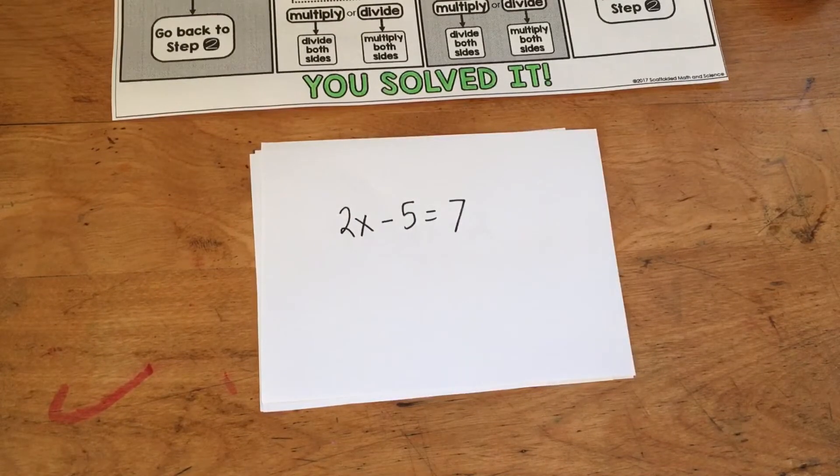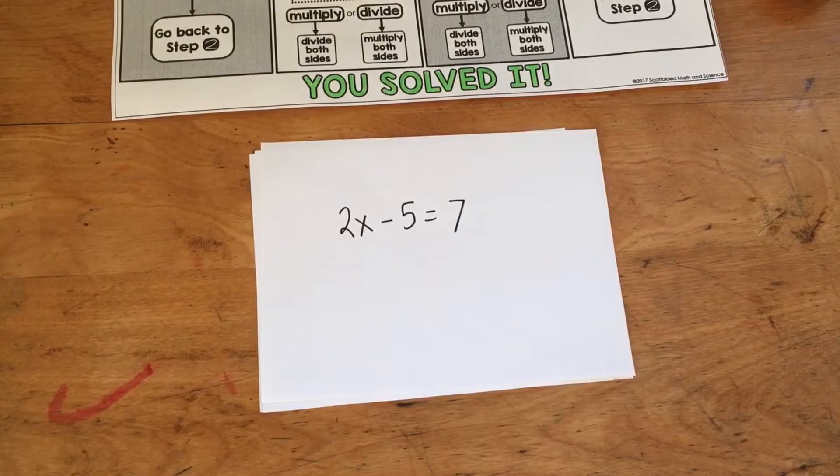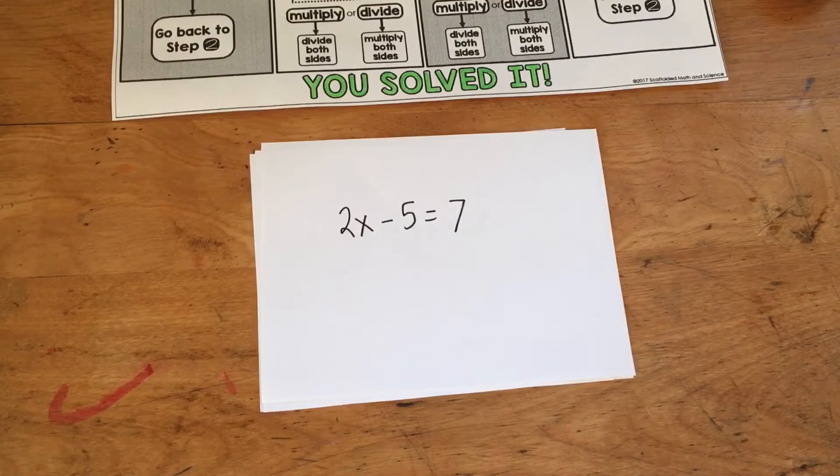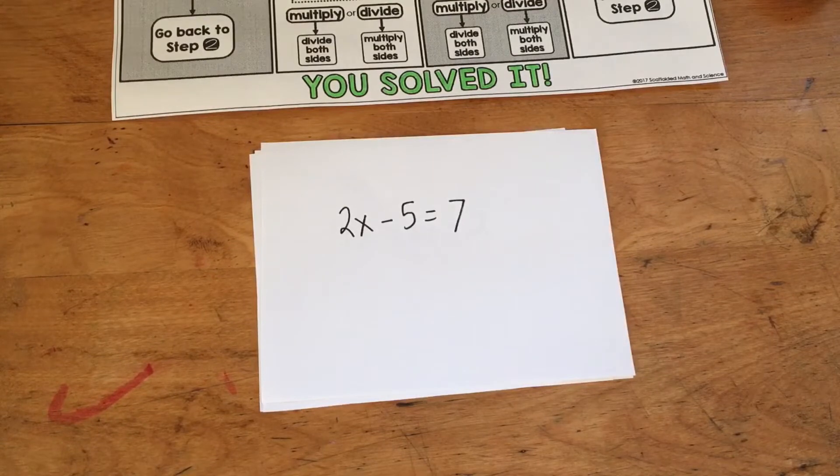Here's a simple method for solving equations that has worked well with my students who are struggling. In an equation such as 2x minus 5 equals 7, the first thing I'll ask students is which side of the equal sign has two terms on it?